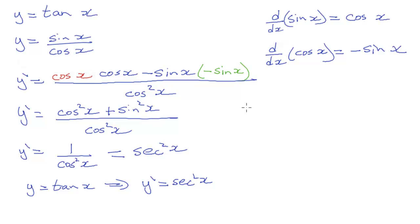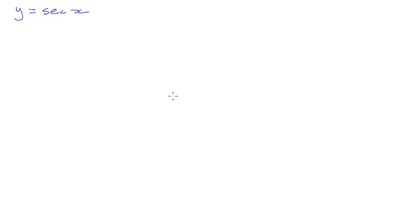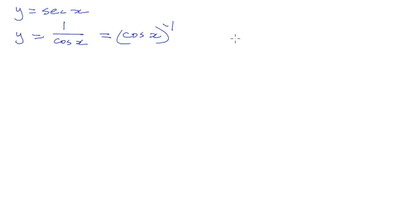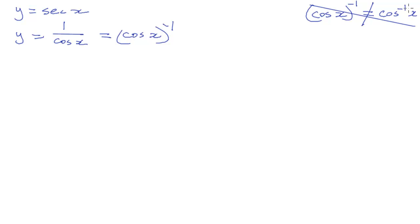Now let's move to secant. We start with y equals secant x. Rewriting secant, that is 1 over cosine of x. Another way to write that — which actually makes the derivative easier — is cosine of x, all in brackets, to the minus 1. Not to be confused with the inverse cosine function. These are not the same — that's a mistake I see all the time. This is the reciprocal, or 1 over the cosine function. This is cosine of x to the power of minus 1, or 1 over cosine x.